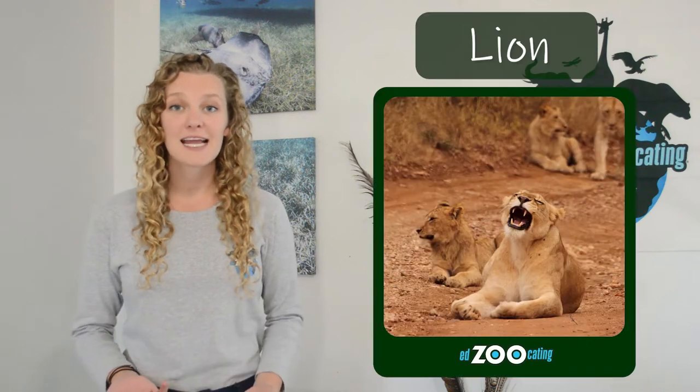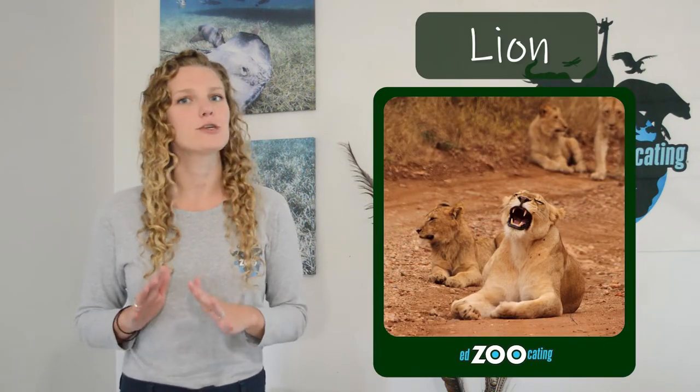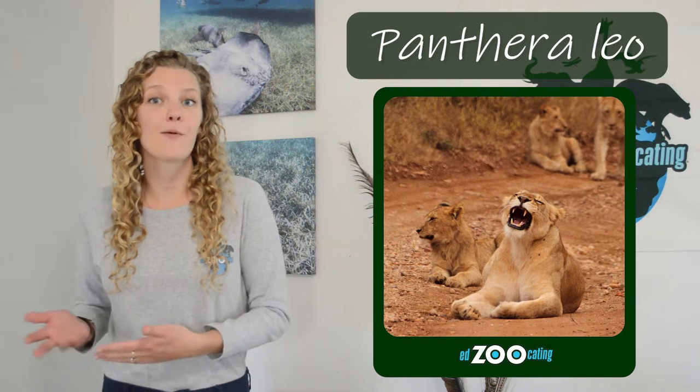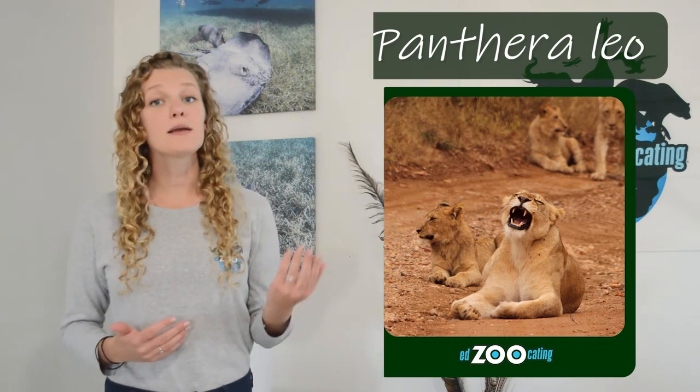Most of the time when we're talking about animals, we're going to be using their common names. When I talk about a lion, I usually just say lion — I usually don't say Panthera leo, which is their scientific name. Common names are used more frequently in casual conversation, but it is important that we understand how to interpret a scientific name and how to write one.